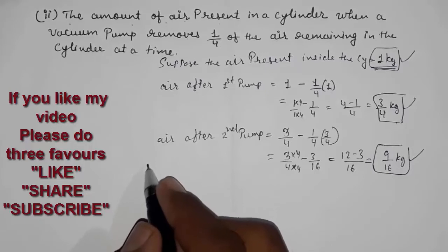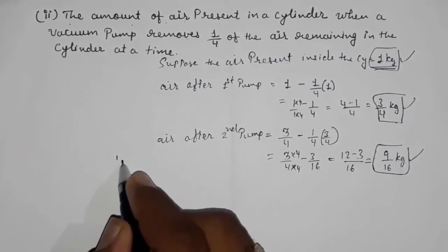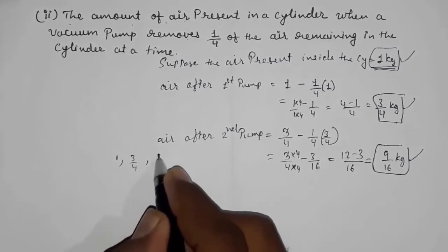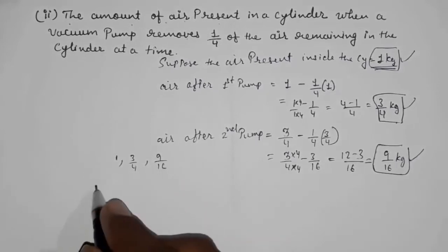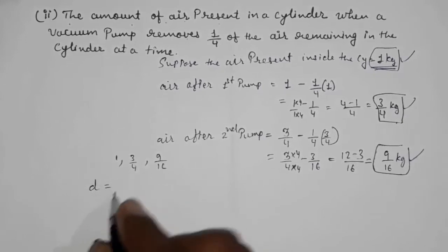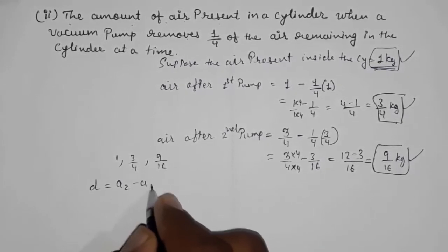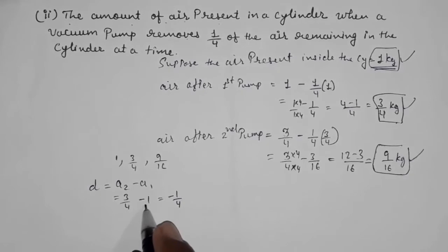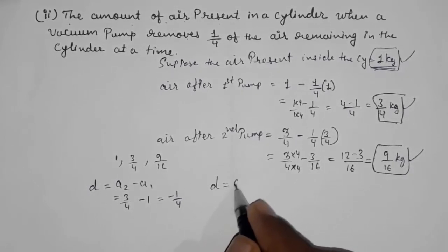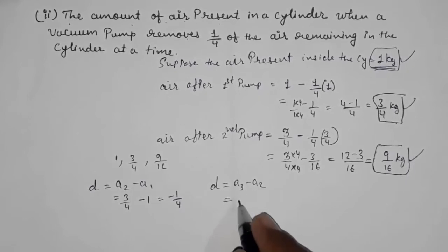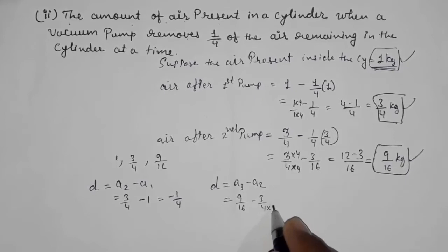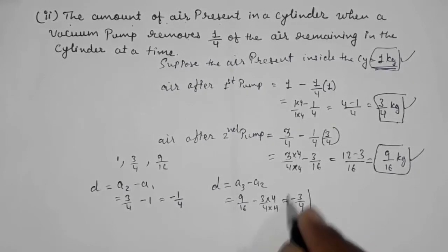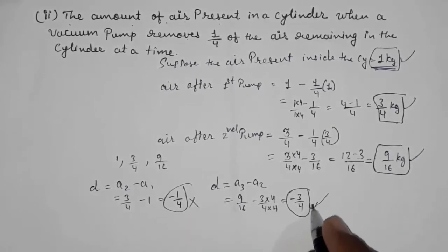Now we have three terms: 1, 3/4, and 9/16. Check the differences: a2 − a1 = 3/4 − 1 = −1/4, and a3 − a2 = 9/16 − 3/4 = 9/16 − 12/16 = −3/16. The differences are not the same, so this sequence is not forming an AP.